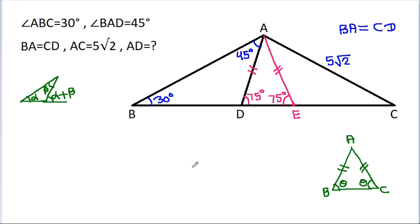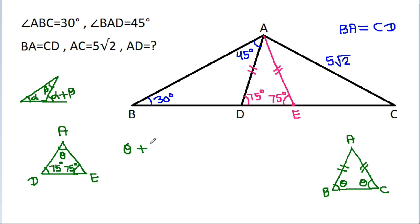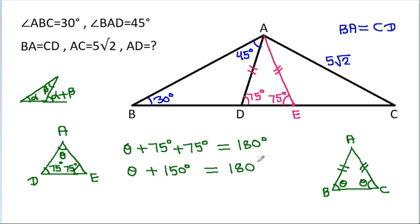In any triangle, the sum of all three angles is 180 degrees. So in triangle ADE, this angle is 75 degrees, this angle is 75 degrees, and this angle θ plus 150 degrees equals 180 degrees, giving θ equal to 30 degrees. So this angle is 30 degrees.